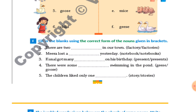The correct answer is 'factories' because 'there are two' means more than one. Second one: 'Mira lost a ___ yesterday.' 'A' shows that there is one thing she lost, so the answer is 'notebook', not 'notebooks' — not more than one, only one.